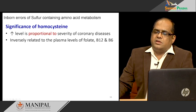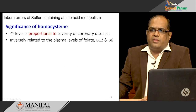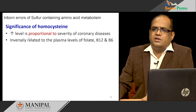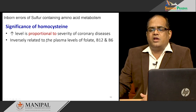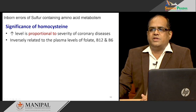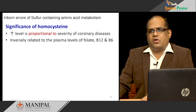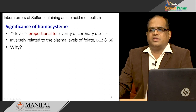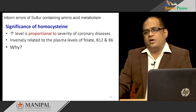The homocysteine level is proportional to the severity of coronary disease — the more homocysteine in the blood, the greater the severity of coronary disease. It is inversely related to the three vitamins: folate, vitamin B12, and B6, because these vitamins are required for homocysteine metabolism. We have to explain why homocysteine is associated with so many disorders.